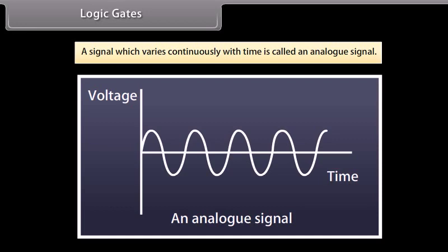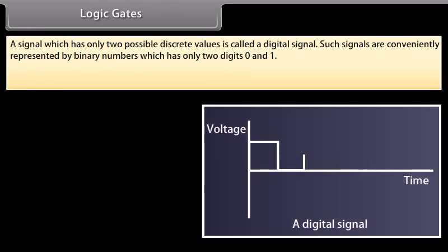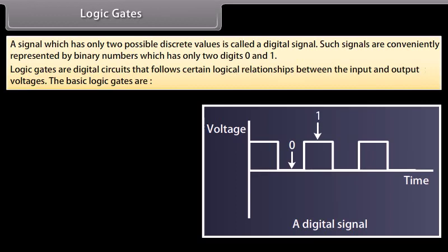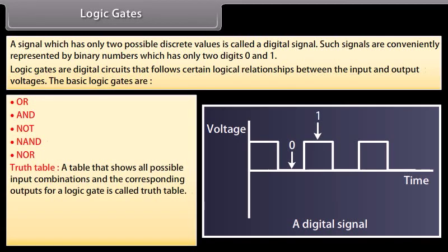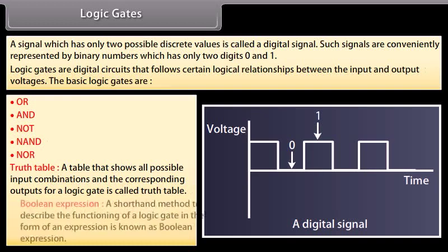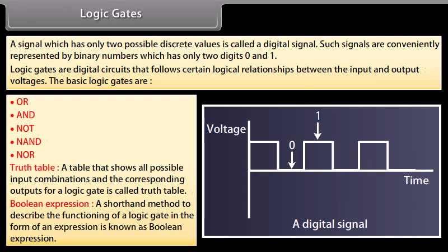Logic gates: A signal which varies continuously with time is called an analog signal. A signal which has only two possible discrete values is called a digital signal. Such signals are represented by binary numbers with only two digits, 0 and 1. Logic gates are digital circuits that follow certain logical relationships between input and output voltages. The basic logic gates are: OR, AND, NOT, NAND, and NOR. A truth table shows all possible input combinations and corresponding outputs. A Boolean expression is a shorthand method to describe the functioning of a logic gate.